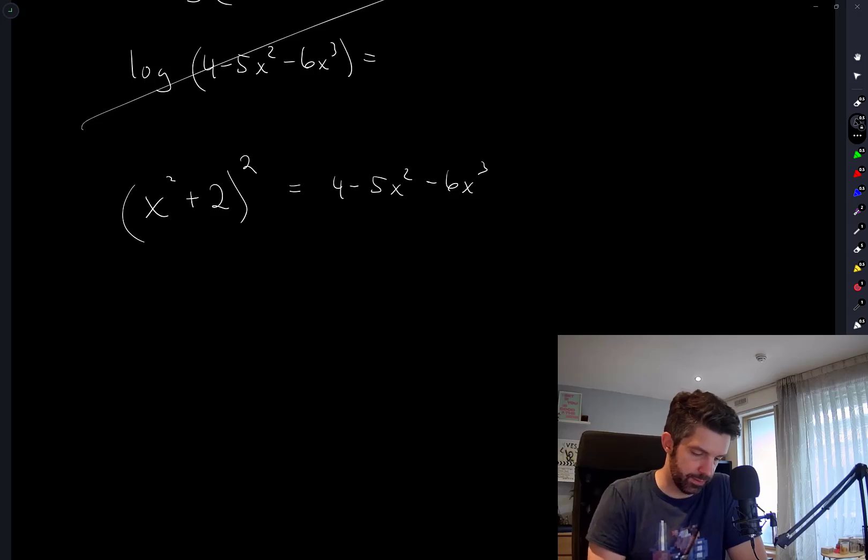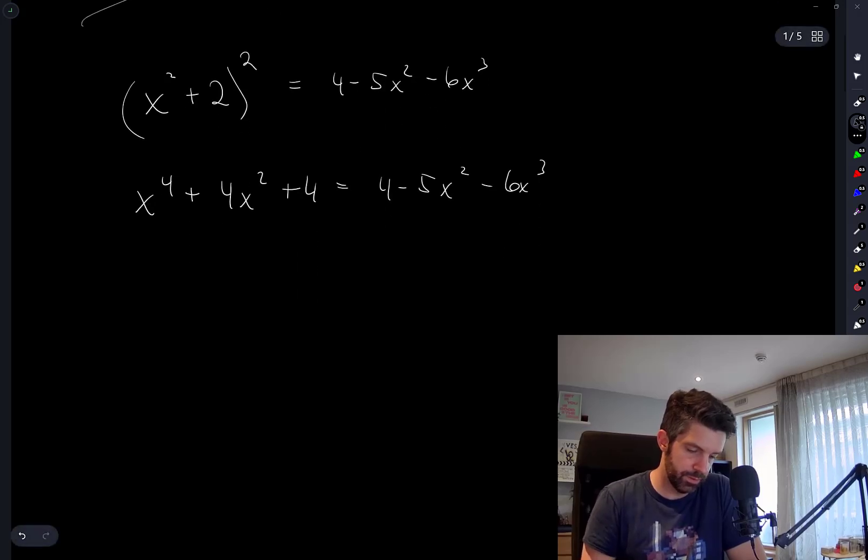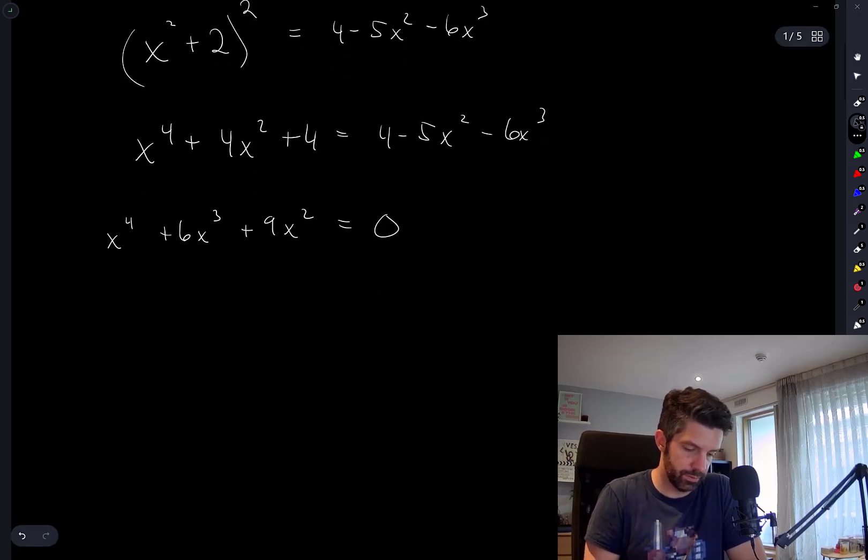Let's expand this. x to the 4 plus 4x squared plus 4 equals 4 minus 5x squared minus 6x cubed. So x to the 4 plus 6x cubed plus 9x squared equals 0.